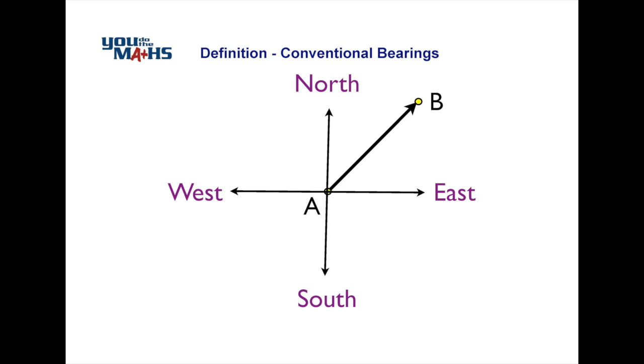Conventional bearings are based on initially either a north or south direction. In this case we're heading towards the north and then what we need to do is find the angle that we are heading away from north, in this case 51 degrees, and it happens that we're heading away from north to the easterly side.